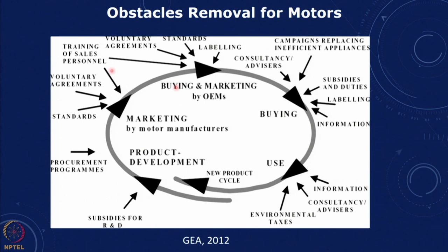This is from a German study which shows how to remove the obstacles for energy efficient motors, and there are a whole set of different policies which can be done. In the case of motors, there are original equipment manufacturers — for instance in textiles and many industries — who buy process equipment where the electric motors are part of the equipment.